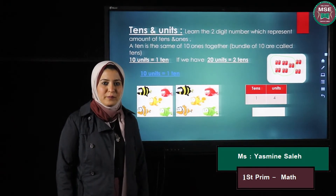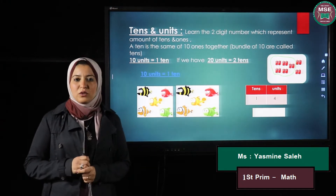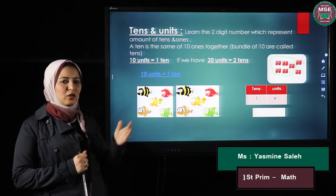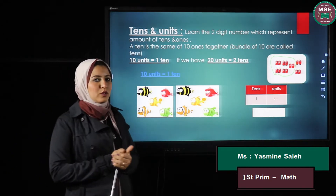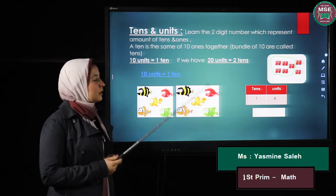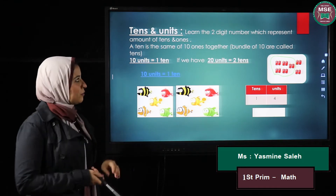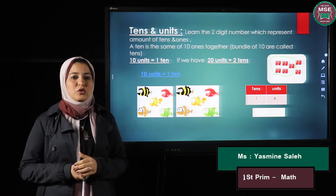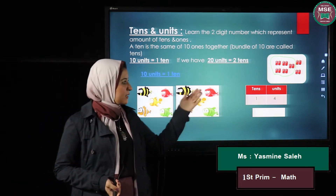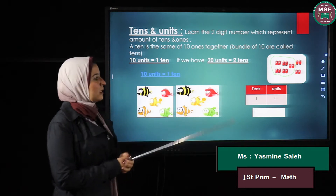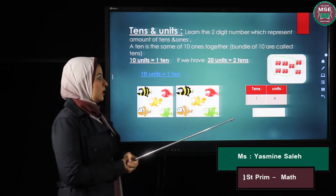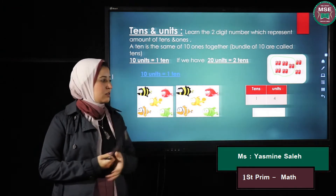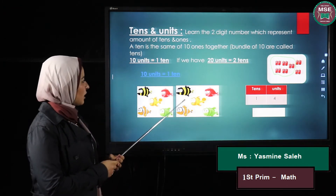Good morning, dear students. Now we will continue our video about the revision for first primary from the beginning of the term. We will talk about the tens and the units. If I have any number that consists of more than one digit, the first digit from the left hand is the unit, then the next one will be the tens. Each digit has a house: unit and tens.